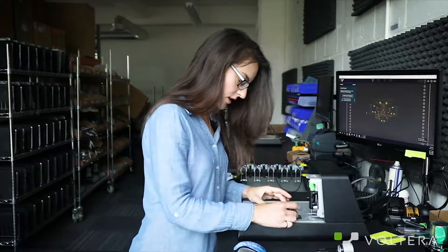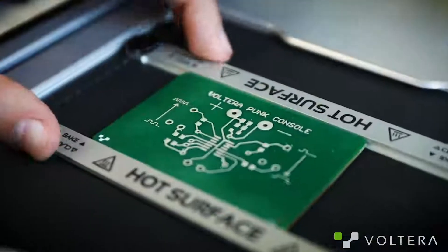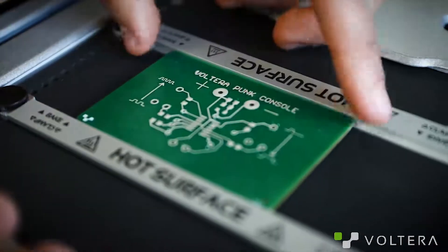Now it's time to cure this board. Simply remove the sacrificial layer, flip the board, and rest it on the baking ledges of the clamps.